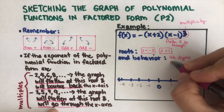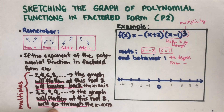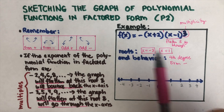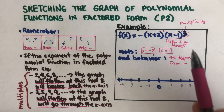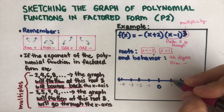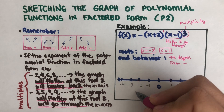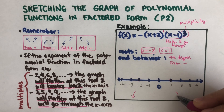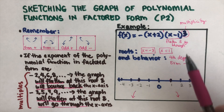Four is even and the leading coefficient is negative, so this is even negative — both ends go down. Let's place the roots on the graph: first root at negative two, second root at positive one. Since this is even negative, both sides go down.